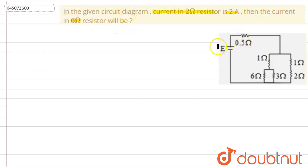We can see that we have been given a circuit diagram here. What we have been given is that the current through the 2 ohm resistor is equal to 2 ampere. So we need to find the current through the 6 ohm resistor.